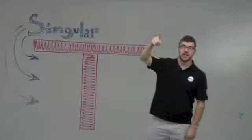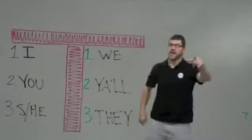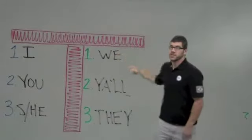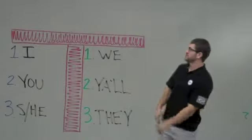First thing you do is draw the tricked out T. Singular, plural, one, two, three. Then add the pronouns: I, you, he, she.